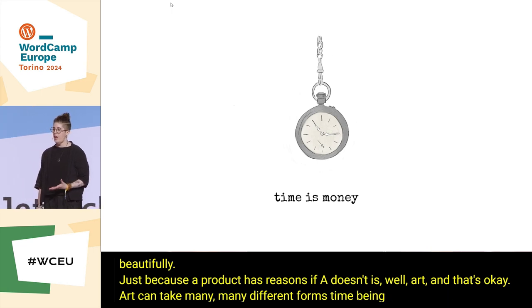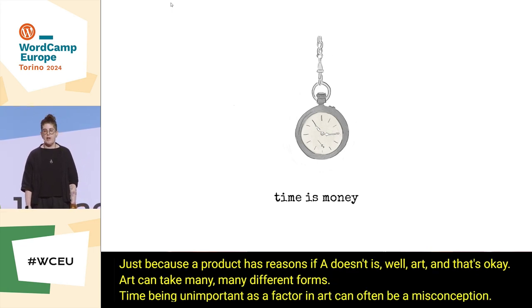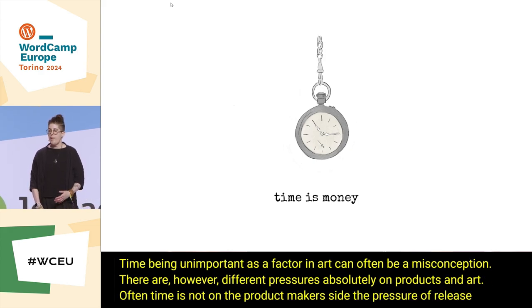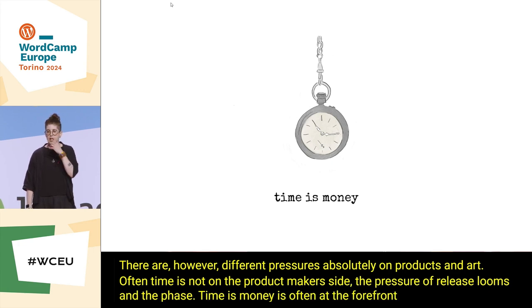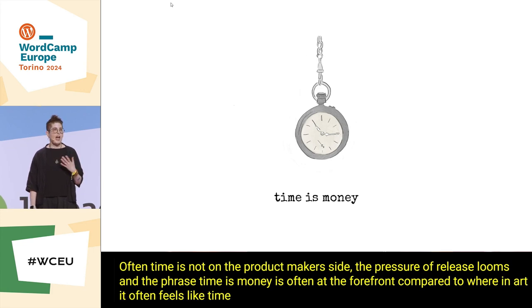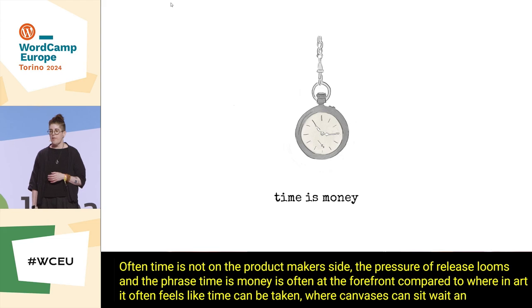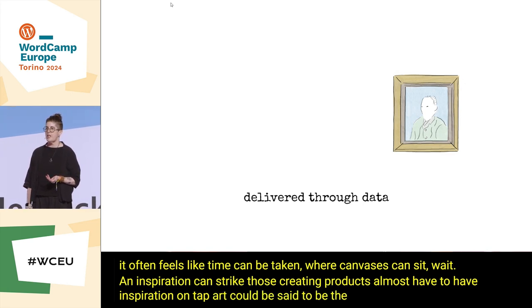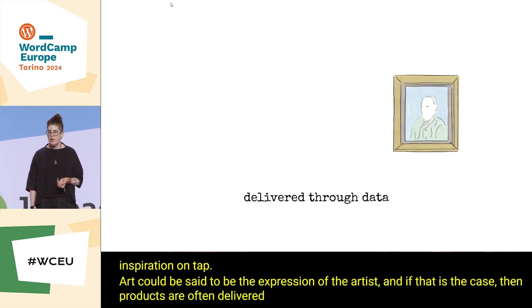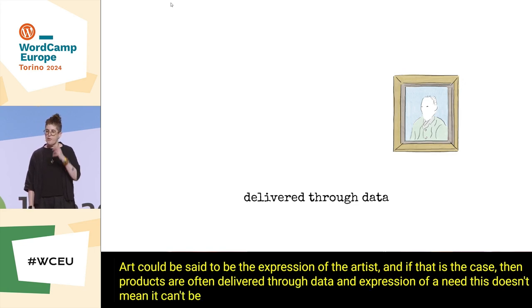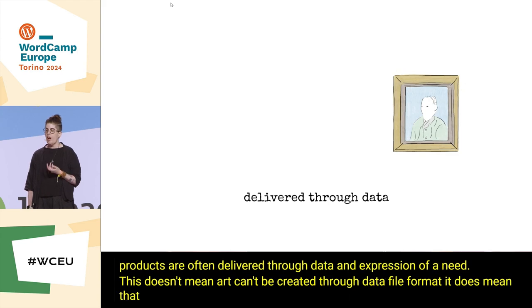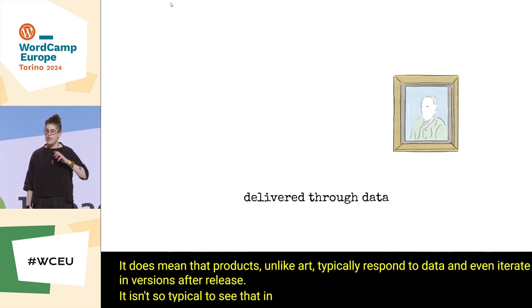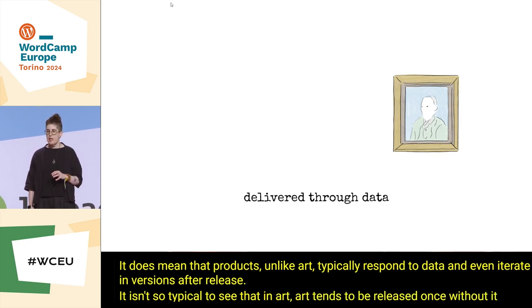Time being unimportant as a factor in art can often be a misconception. There are different pressures on products and art. Often time is not on the product maker's side — the pressure of release looms, and 'time is money' is often at the forefront. In art, it often feels like time can be taken where canvases can sit, wait, and inspiration can strike. Those creating products almost have to have inspiration on tap. Art could be said to be the expression of the artist, whereas some products are delivered through data — an expression of a need. Products, unlike art, typically respond to data and iterate in versions after release. Art tends to be released once without iterations, although some pieces do break that rule.